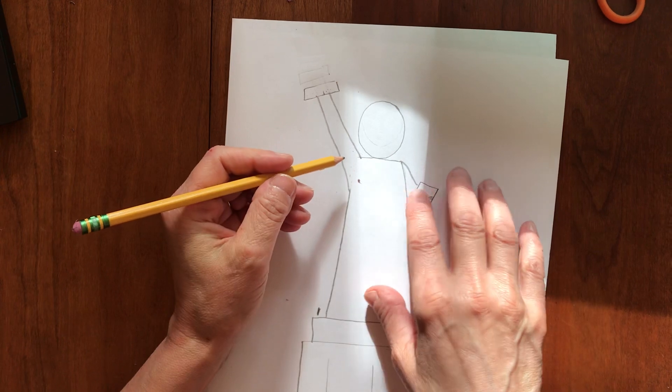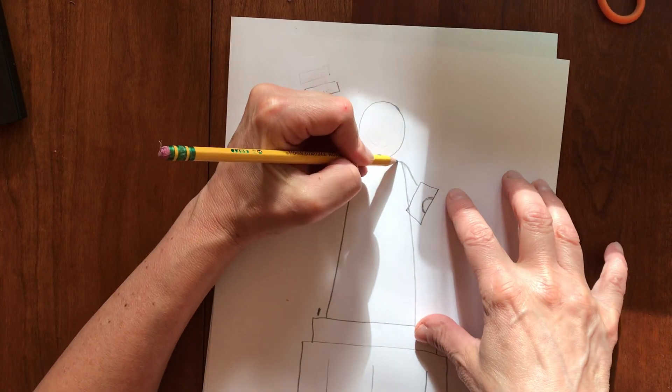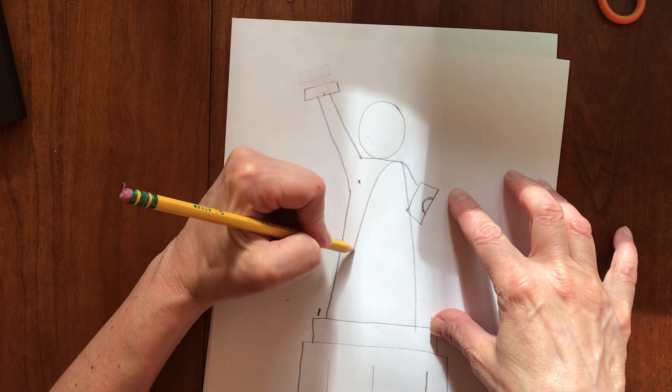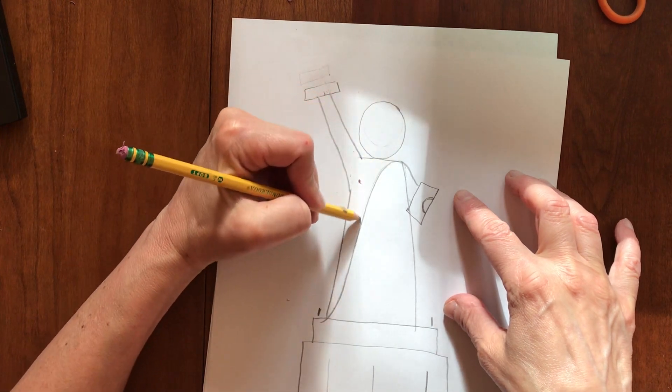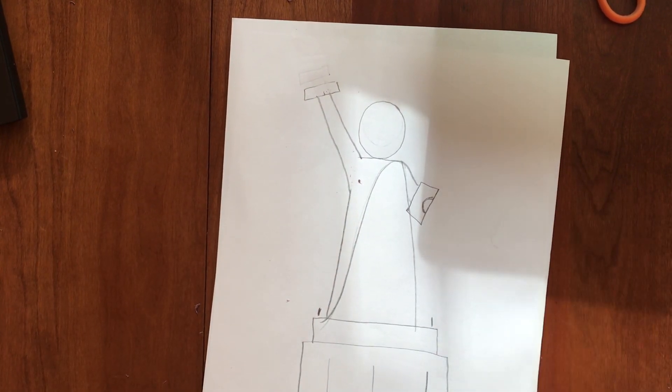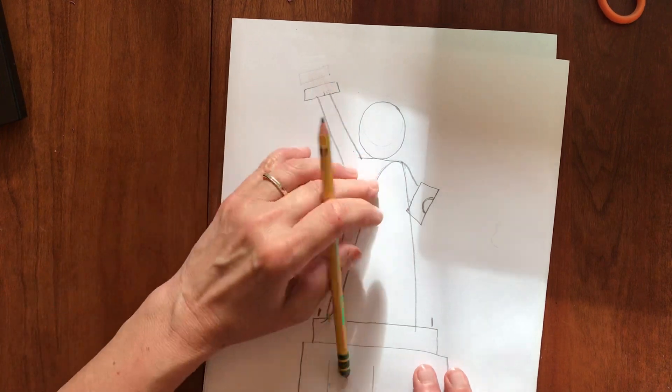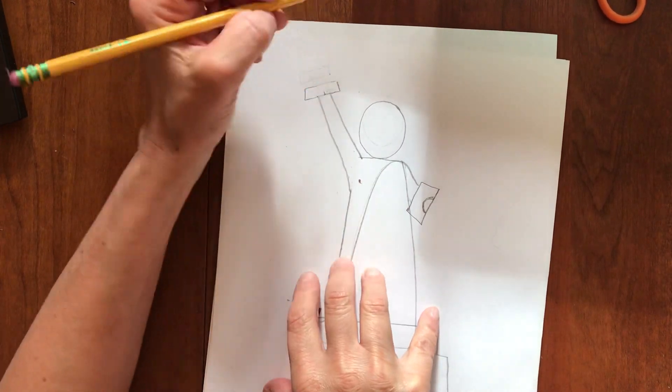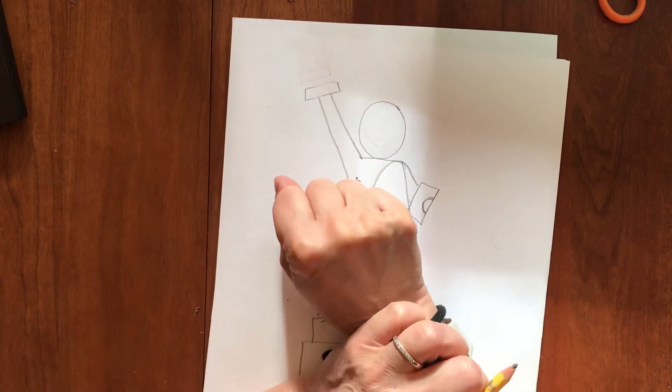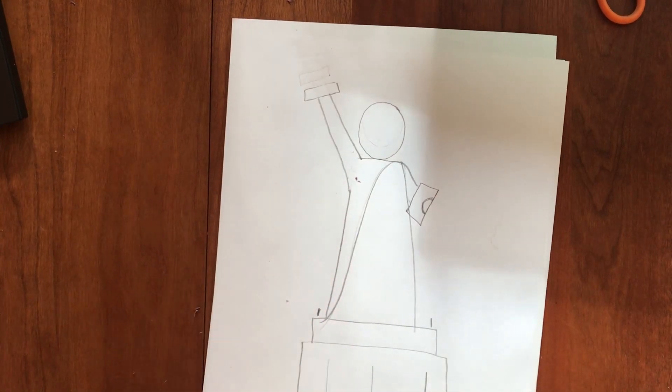Now you erase your guidelines. This one you don't have to because it's going to be part of the robe. You're going to have like a curved line coming down from the robe. I just did one for now. Now the torch, let's get back to the torch.